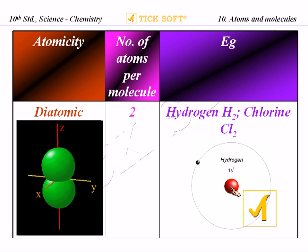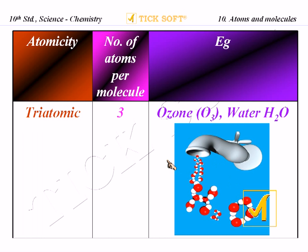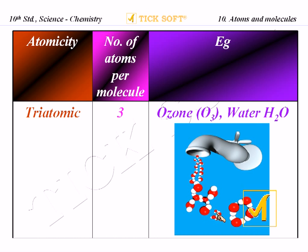For triatomic molecules, the number of atoms per molecule is three. Examples include ozone and water. Ozone has the molecular formula O3 — three oxygen atoms. In water, there are two hydrogen atoms and one oxygen atom. In the picture of the water molecule, the red-colored structures represent oxygen and the white color represents hydrogen — one oxygen always combines with two hydrogen atoms.